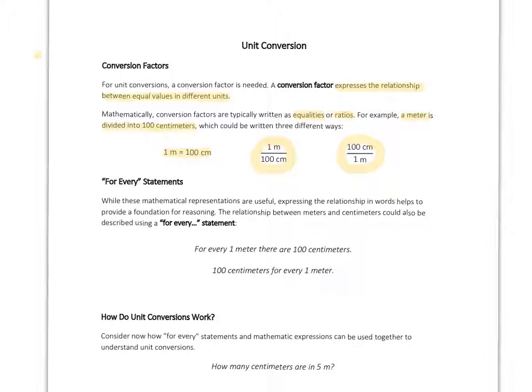This is the way we can show it mathematically, but we could also express this relationship using reasoning, and we can use a 'for every' statement for this. A 'for every' statement tells us how many of one unit there are in another. So for this, we could say for every 1 meter there are 100 centimeters, or say the reverse of that, 100 centimeters for every 1 meter.